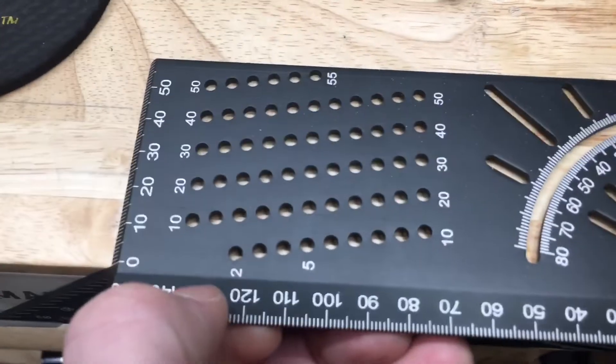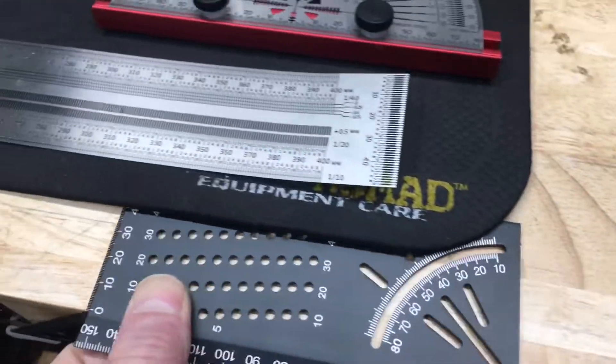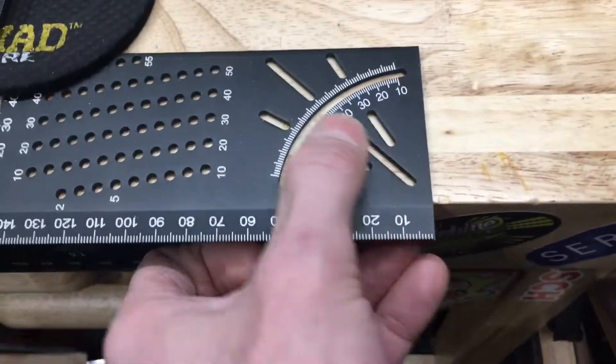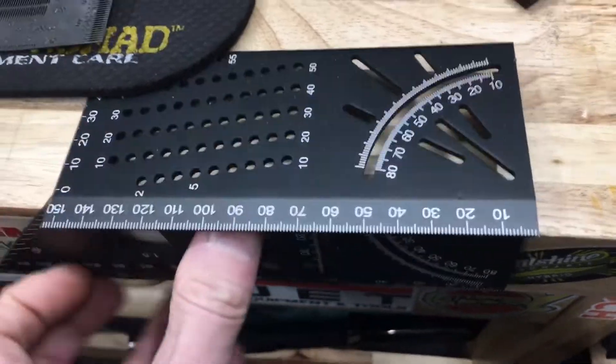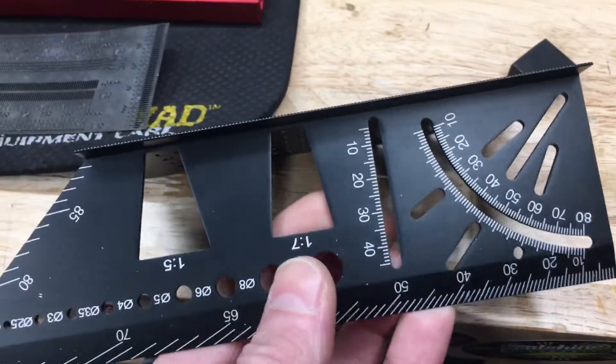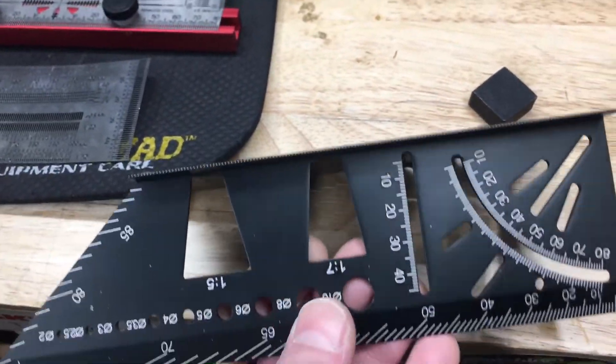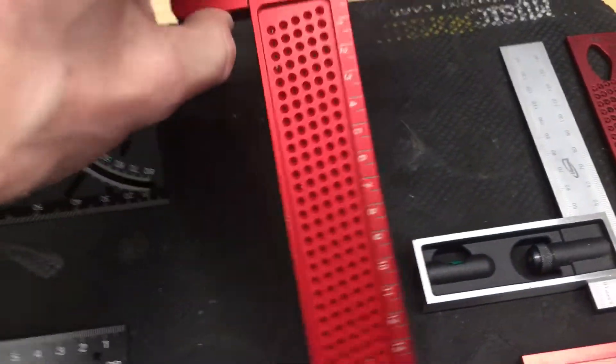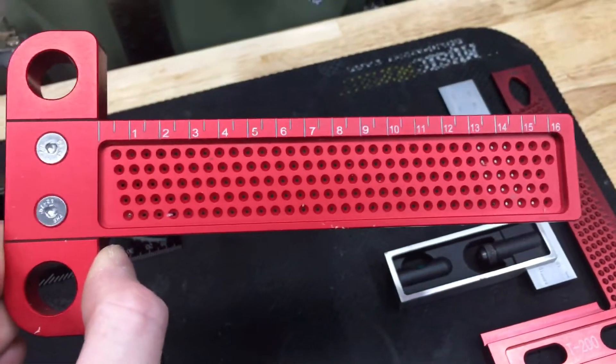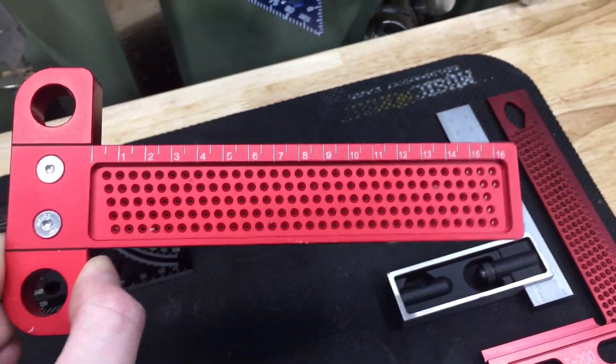You can put your pencil in there, run this up the side, you can do these angles. Everything is all metric. Dovetails, a bunch of stuff, drill guides. It's a cool little thing, metric t-square. It's only 160 millimeters,